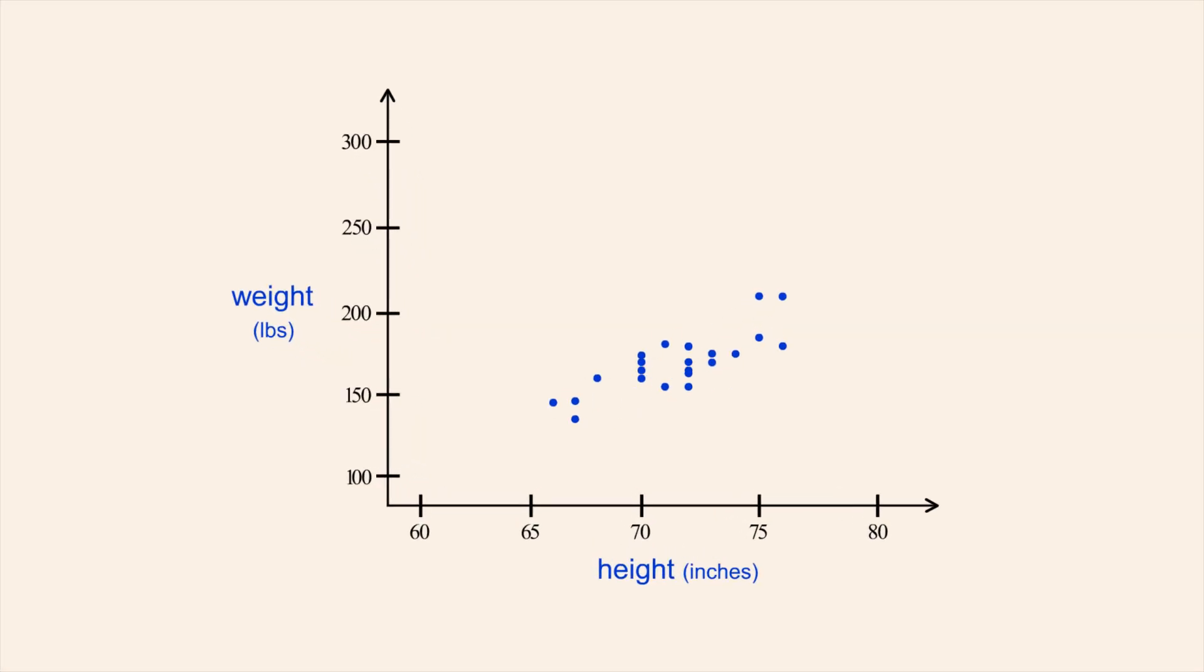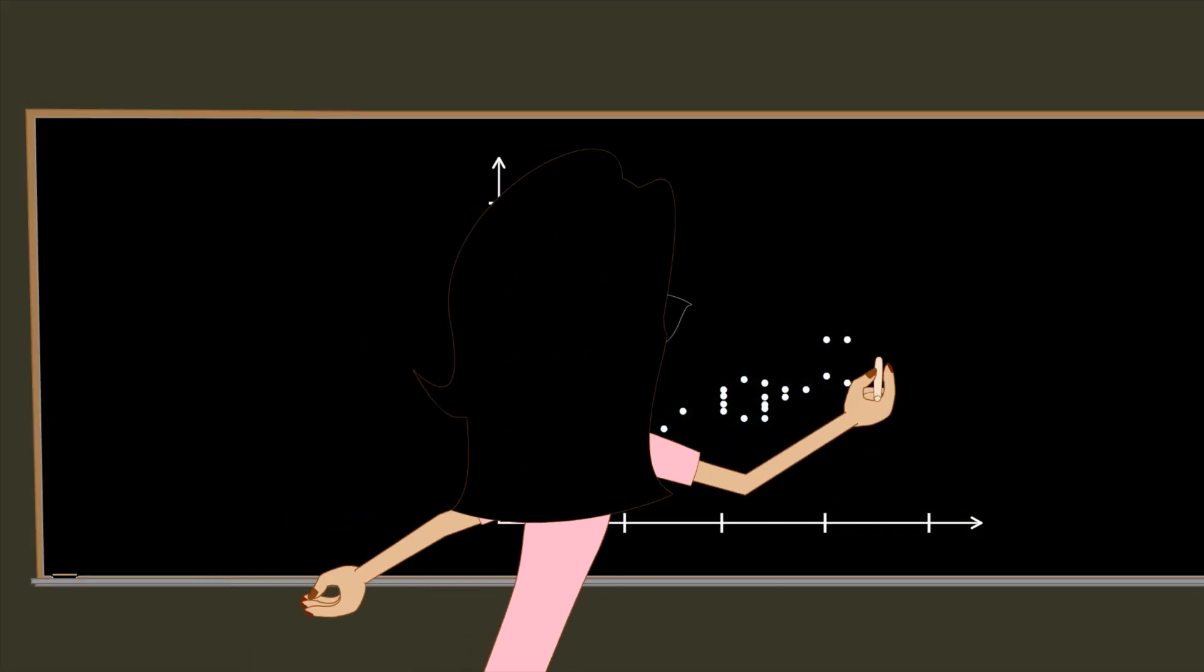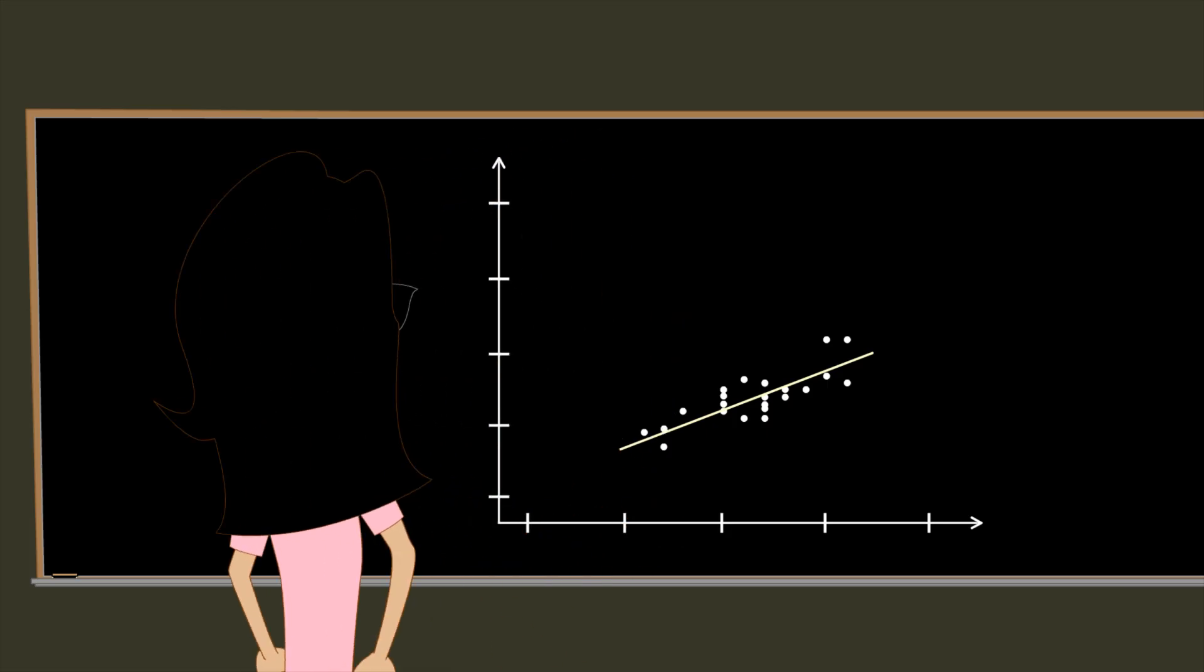A trend line is sometimes called a line of best fit, and there are various ways to draw this line. In general, a trend line is drawn in a way that minimizes the distance between the line and the data points. One way to draw a trend line is to simply estimate the position which seems to fit the data points the best.